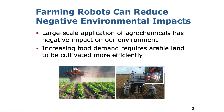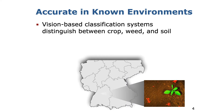In conventional farming, tractors apply large amounts of agrochemicals uniformly across the field, which has a negative impact on the environment. Farming robots have the potential to reduce those negative impacts by targeted treatment through actuators like selective sprayers, lasers or mechanical tools. Vision-based classification systems form the basis for such weed control interventions.